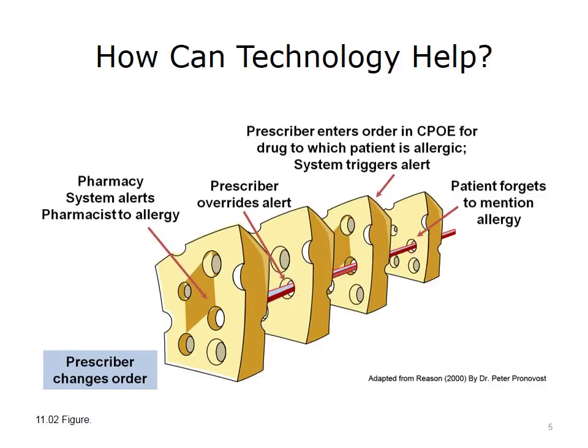In the kitchen, each slice of cheese that you add to the stack introduces a new layer that potentially covers one or more holes in the slices below. In healthcare, we may need several Swiss cheese slices. When the patient forgot to mention a drug allergy, a hole appears and the potential for risk is increased. If the allergy had been documented in the electronic record at a previous visit, when the prescriber entered the order in CPOE, the system would trigger an alert telling the prescriber that the patient is allergic to the drug — providing a defensive layer. Should the prescriber override the alert, the pharmacy system could alert the pharmacist to the allergy, and the pharmacist would call the prescriber to discuss. Again, a defensive layer is put into place by technology.